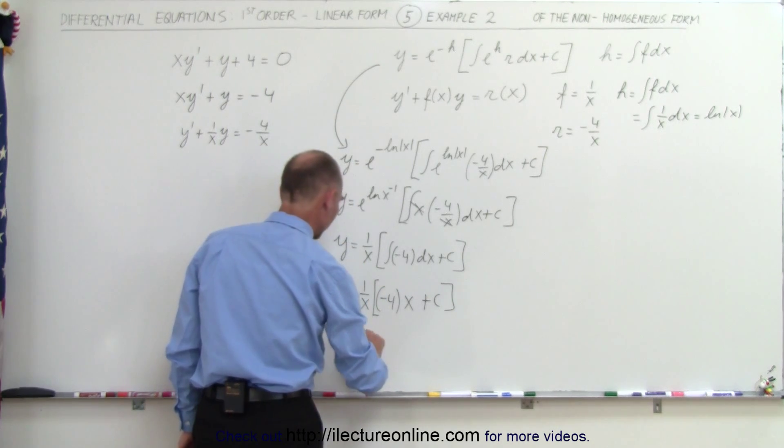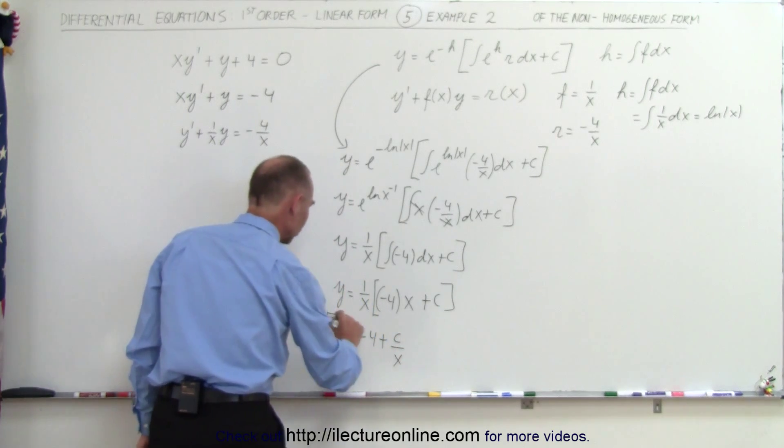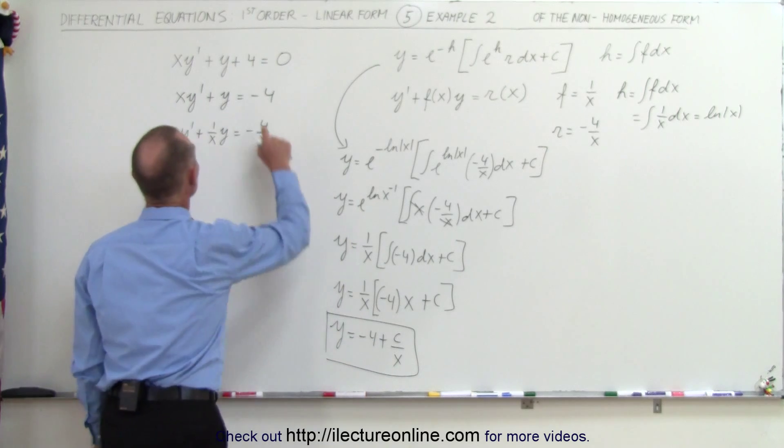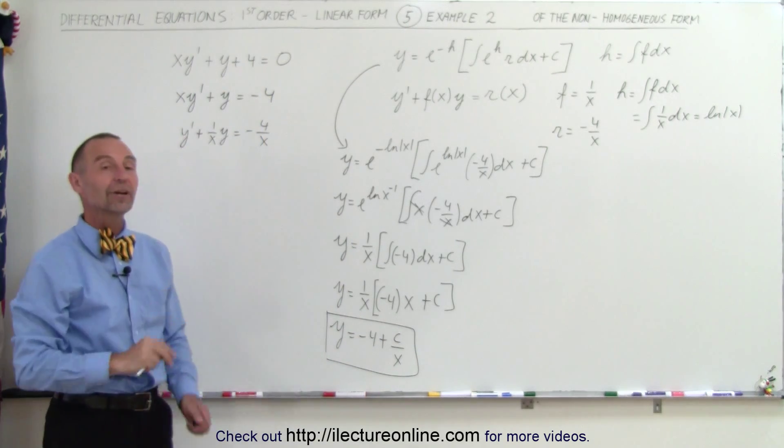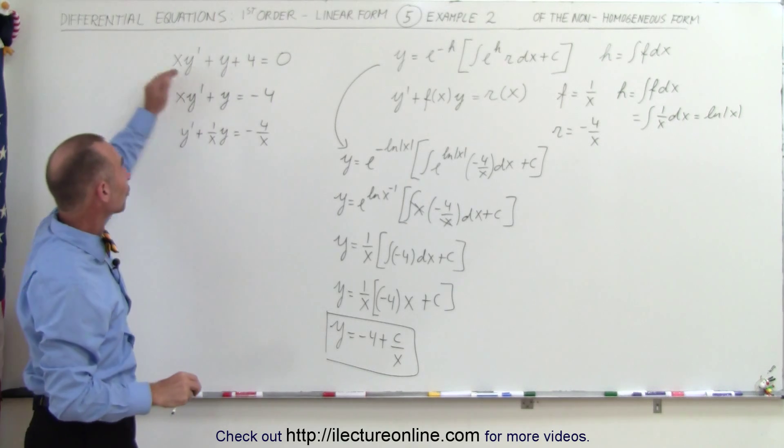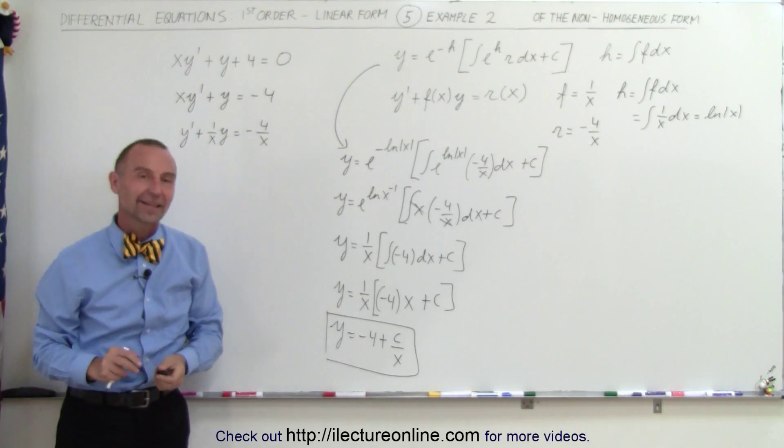As the final solution to our original differential equation over here. So y equals minus 4 plus c over x is the solution to our first order linear non-homogeneous differential equation, and that's how it's done.